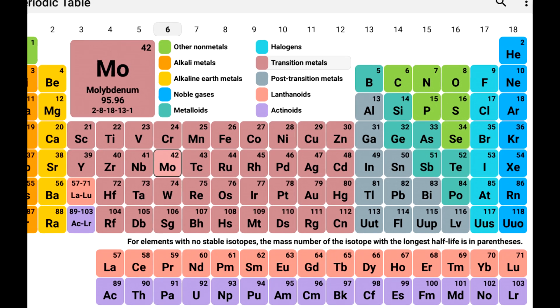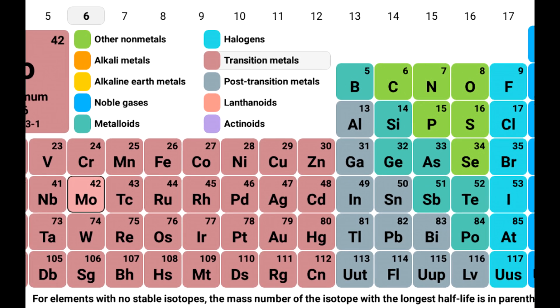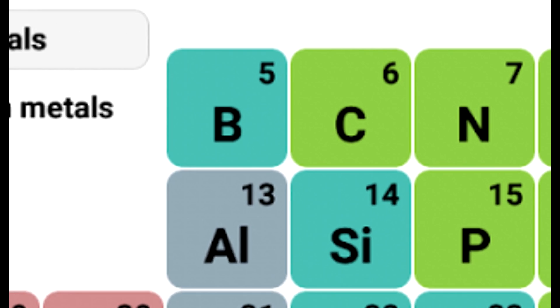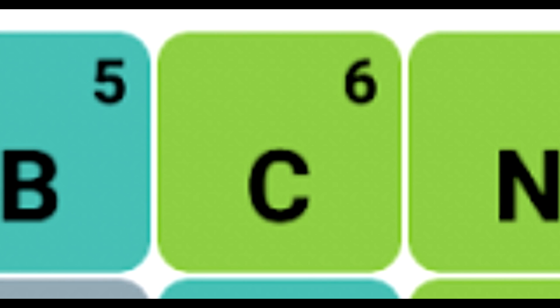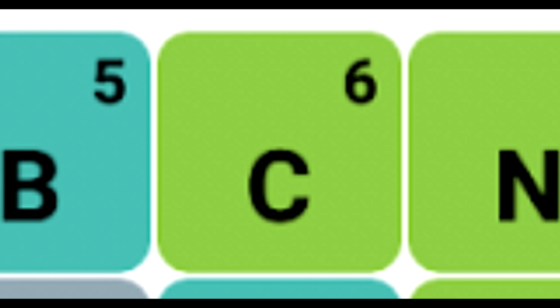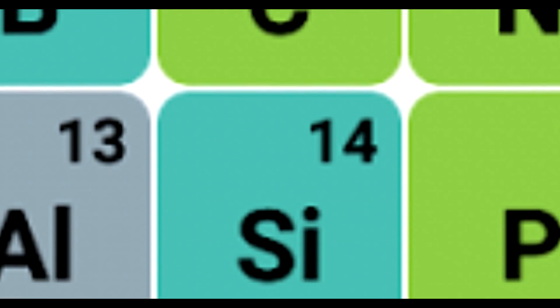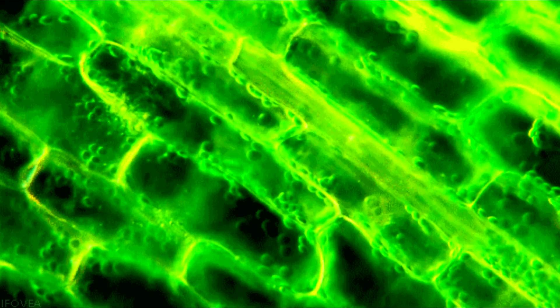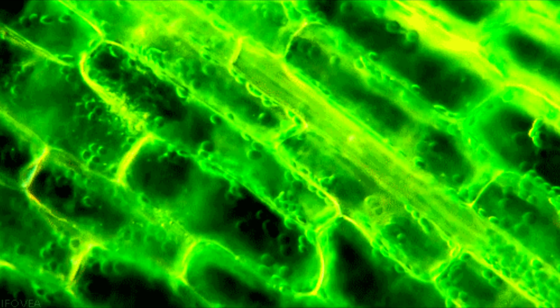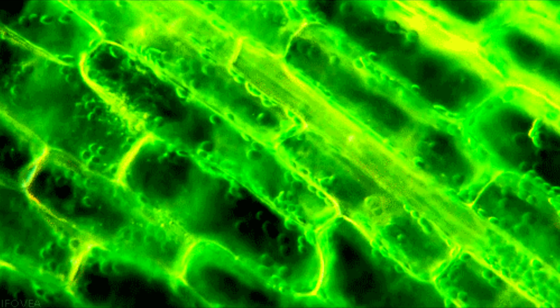But carbon is not the only element in the periodic table that can do this. One of the other elements that can do this is silicon, which is located right below carbon in the table. So could life also be based upon silicon?